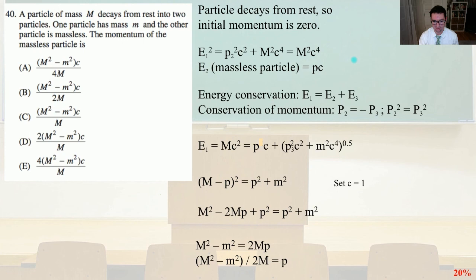And so finally, we're going to get, after some algebraic steps, capital M squared minus M squared, divided by 2 times capital M equals P. And so, remembering that we set C equal to 1, that is answer B.